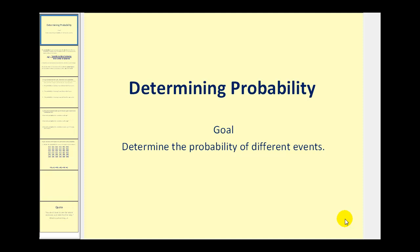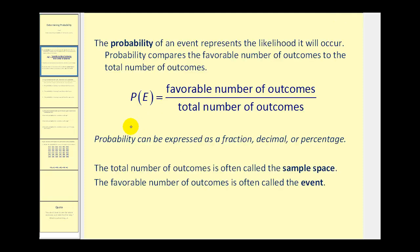Welcome to a second video on probability. The goal of this video is to determine the probability of different events. This video builds on what we learned from the introductory video on probability, and we'll also be using combinations to determine some of the probabilities. To review, the probability of an event compares the favorable number of outcomes to the total number of outcomes, and this can be expressed as a fraction, decimal, or percentage. Let's take a look at some examples.